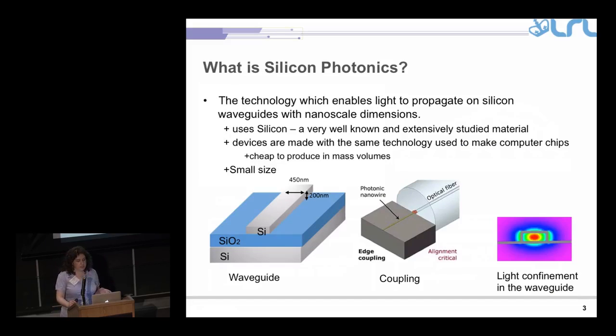The solution for this is silicon photonics. What is silicon photonics? This is the technology which enables light to propagate in silicon waveguides, but also the devices which allow us to manipulate light on the nanoscale. Why is it good? Well, it uses silicon, which is one of the very well known and extensively studied abundant materials. The devices needed for silicon photonics are made with the same technology used to make computer chips. This makes them cheap to produce in mass volumes. There are lots of companies which work in this area, lots of experts and expertise who know how to do it. And also, they are small size.